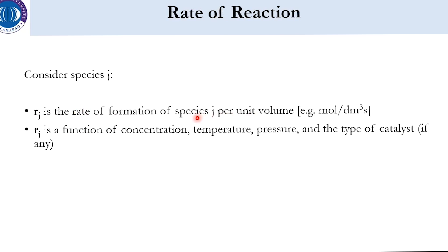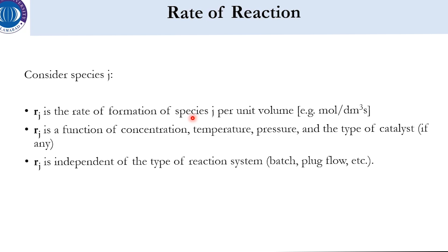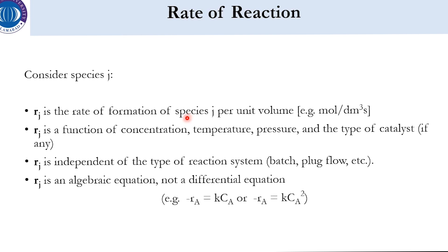For species j, r_j is the rate of formation of species j per unit volume. It is a function of temperature, pressure, concentration, and type of catalyst if a catalyst is included — in which case the prime symbol is used. The rate is independent of the type of reaction system — it is not affected by whether the reactor is batch, plug flow, etc. It is an algebraic equation, not a differential equation. For example, for a first order system: minus r_A = k·C_A; for second order: minus r_A = k·C_A².